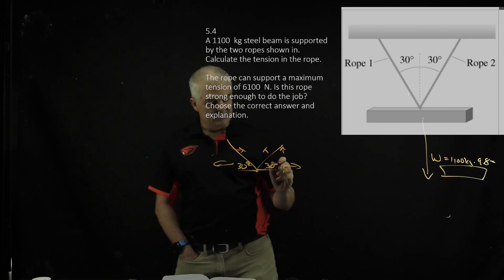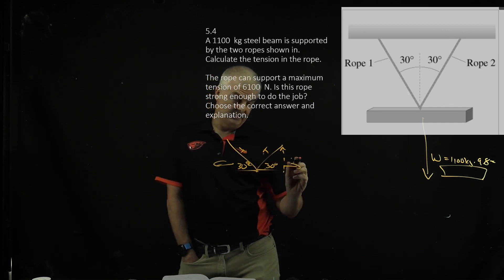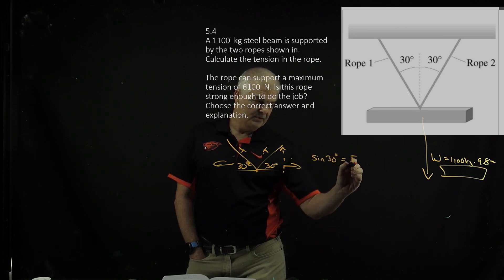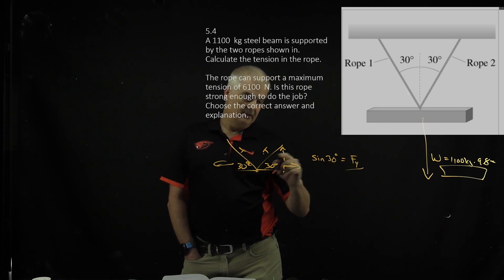So I can say this is opposite over hypotenuse, so that's sine. So I can say sine 30 degrees equals the opposite, that's the force in the Y direction, over the tension.